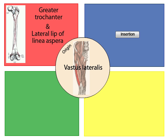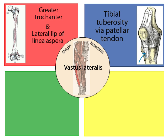Click on the Insertion button. The insertion of the vastus lateralis is the tibial tuberosity via the patellar tendon. The muscles of the quadriceps attach to a common tendon superior to the patella. That tendon encases the patella and attaches to the tibial tuberosity, indicated by the blue arrow.